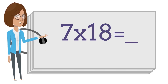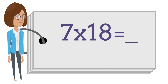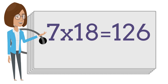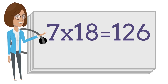7 times 18 is — say the answer out loud. 7 times 18 is 126.